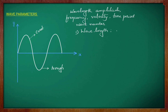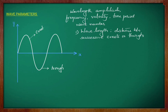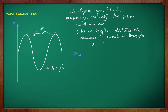Wavelength is the distance between successive crests or troughs. In this particular wave diagram I have considered, there are two crests. The distance between these crests represents wavelength. Wavelength is represented by the symbol lambda. It is the distance between successive crests or troughs and the SI unit of wavelength is meter.